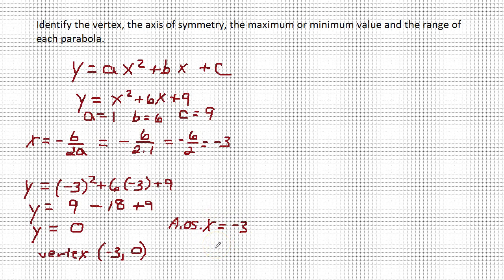Now our maximum or minimum value, we have to determine first of all, does this open up or down? So I know if I have the top of a hill or the bottom of a valley. A is positive, so this will open up. That means we have the bottom of a valley, so we will have a minimum value of 0. Your minimum value equals 0 at x equals negative 3.